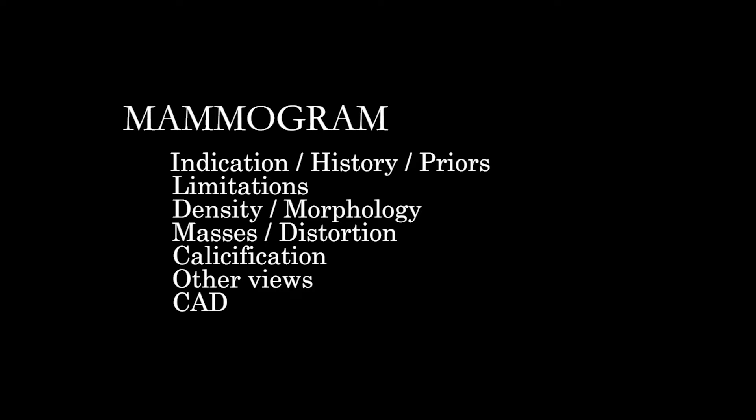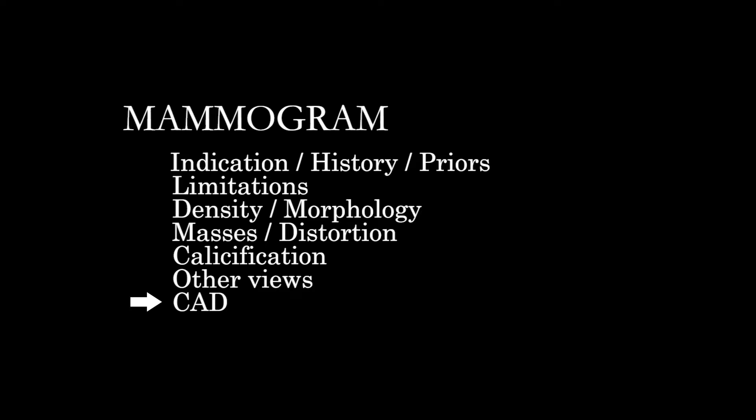In terms of the overall structural organization of how we're going to approach this sort of study: first we're going to look at the indications and history, then look at the study for its adequacy, the positioning of the patient, and things that may limit our ability to understand what's going on. Then we'll assess overall breast density and morphology, look specifically for masses and distortions, then look specifically for calcifications. If there are specialized views, we'll go through those with a similar search pattern. And if your institution provides computer-aided detection, we'll check that as a last step.